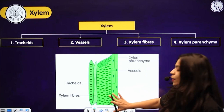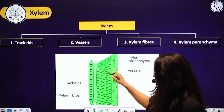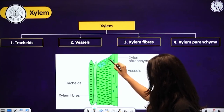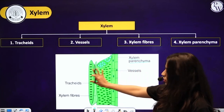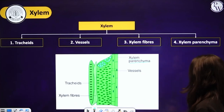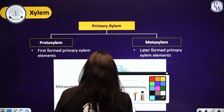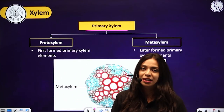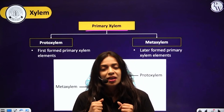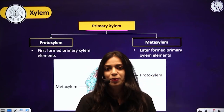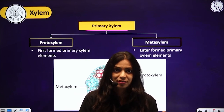Here you can see how the different types of cells are arranged in xylem as a tissue — tracheids, xylem fibers, wide vessels with perforations, pits, and xylem parenchyma. Similar to primary meristematic tissue, we have primary and secondary xylem. Primary xylem is the xylem that has existed since the beginning of the plant's life. Secondary xylem forms later in the life of the plant.